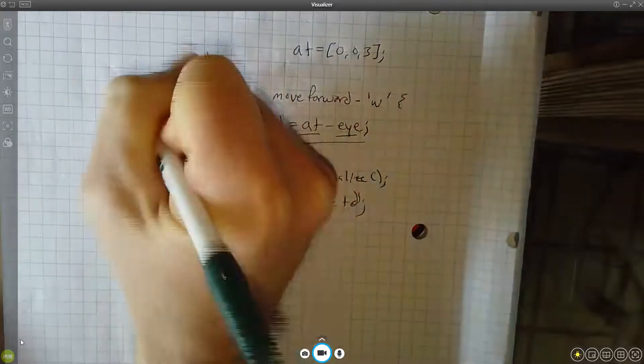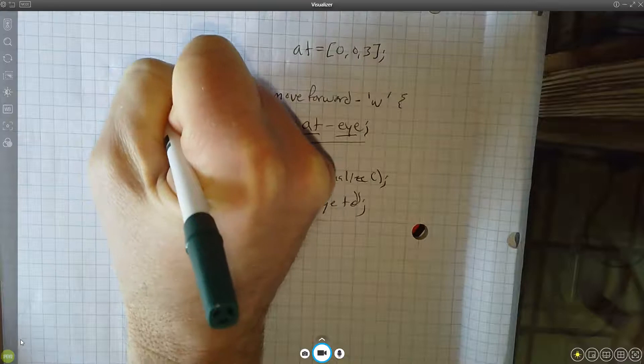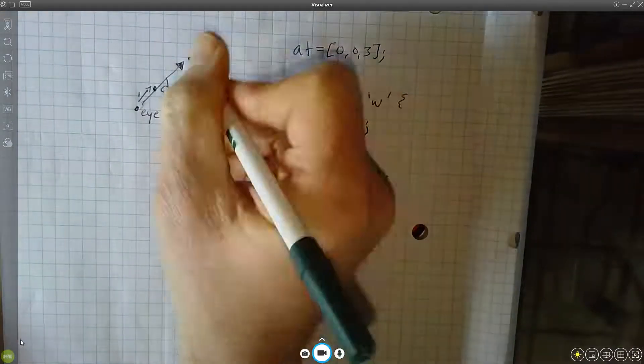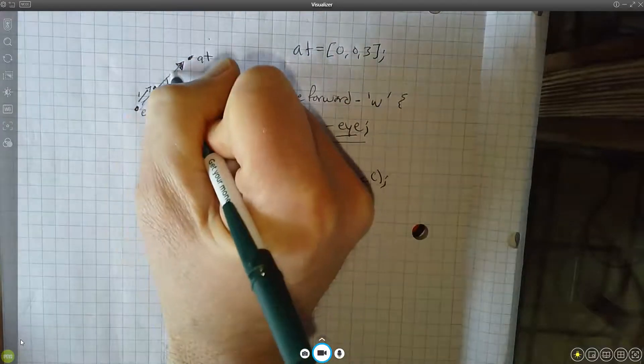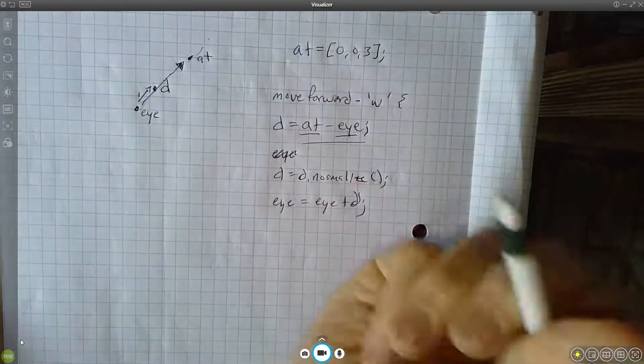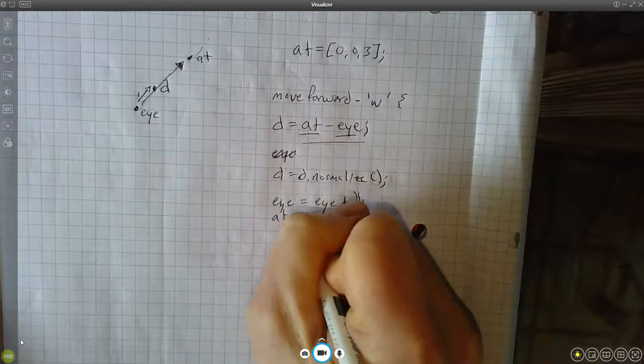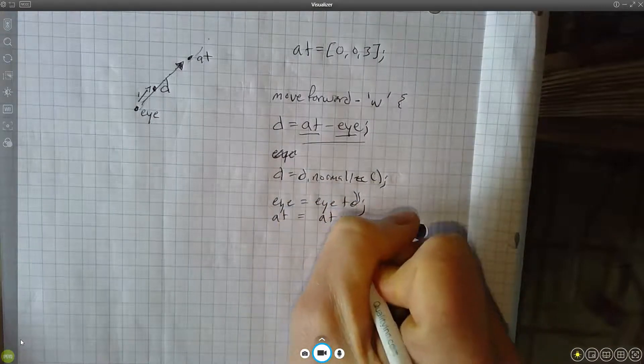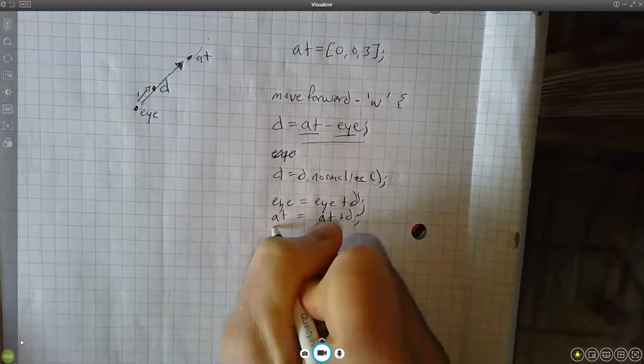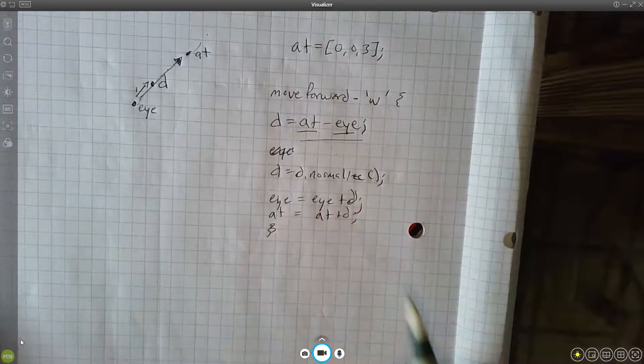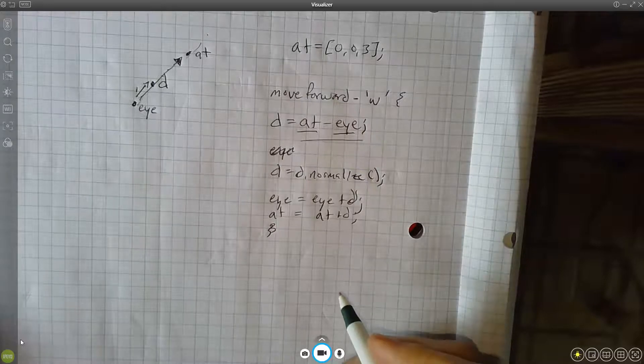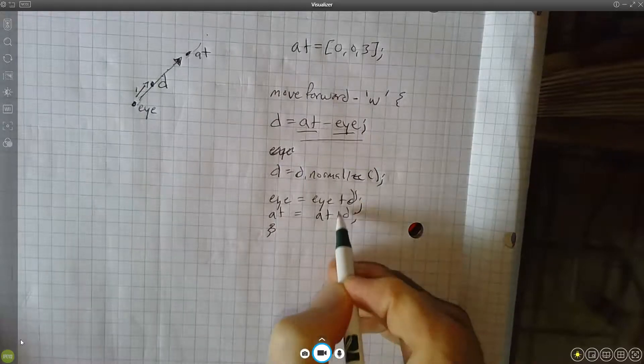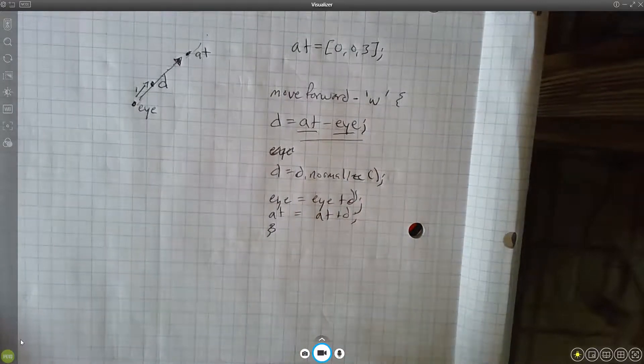And now I want my i to be equal to i plus d. So that's going to step me one unit forward along this direction and give me a new i position. And I better move my at forward too, because if I keep moving my i and I cross at, something weird is going to happen. So let's move our at forward too, so at equals at plus d. Okay, got it, that's moving forward. And backward is going to be quite similar, we're just going to subtract d, so we got forward and backward now.